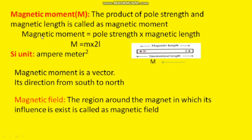What is magnetic moment? The magnetic moment is the product of pole strength and magnetic length. Pole strength is denoted as small m, magnetic length as 2l, and their product is the magnetic moment, denoted as capital M. Its SI unit is ampere-meter squared. Magnetic moment is also a vector, and its direction is from south to north.